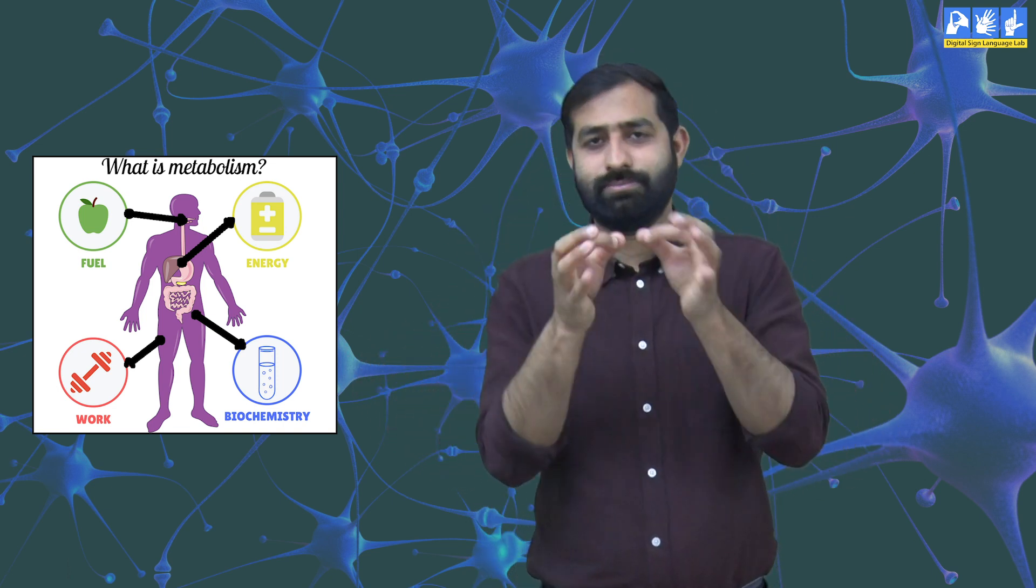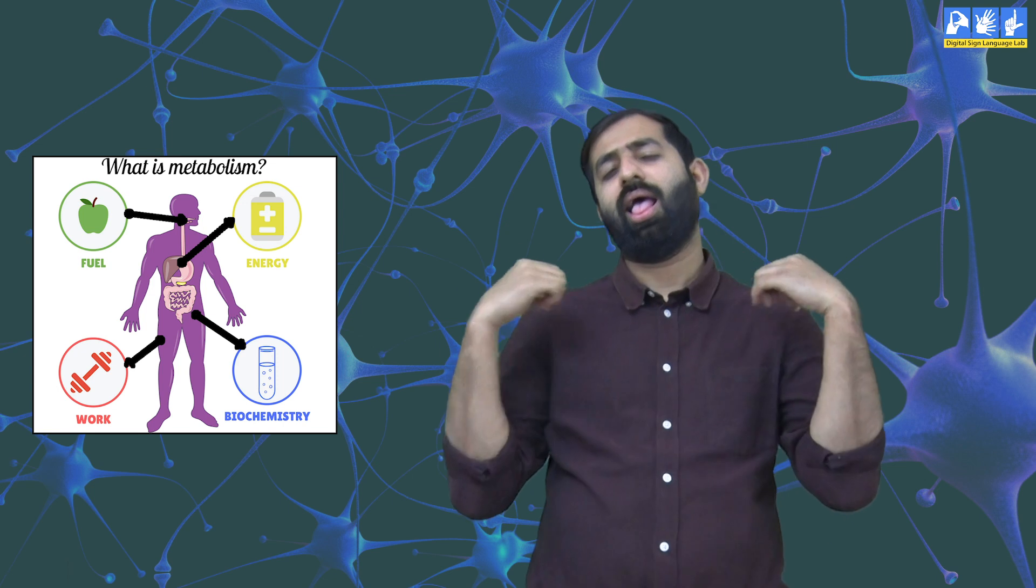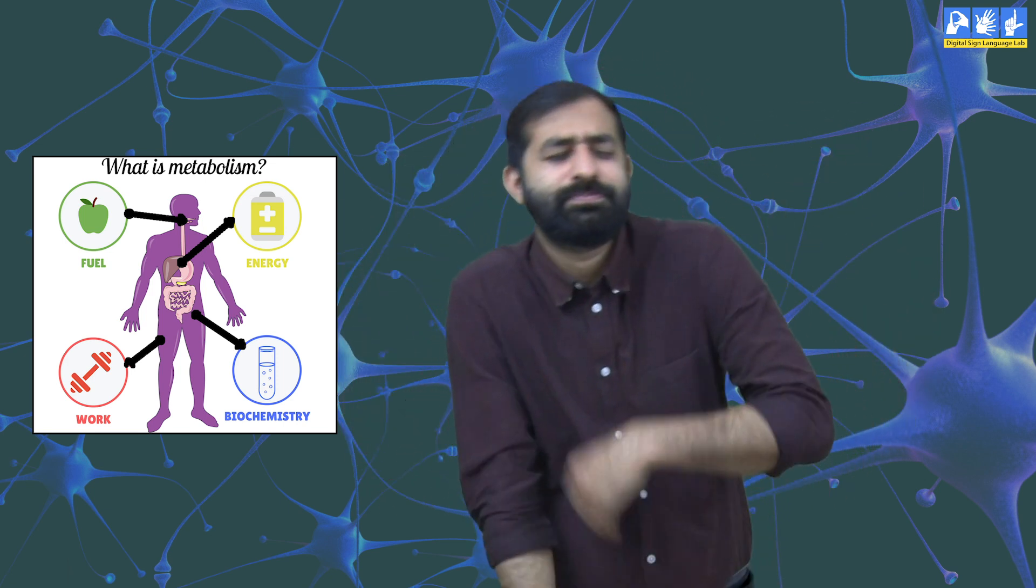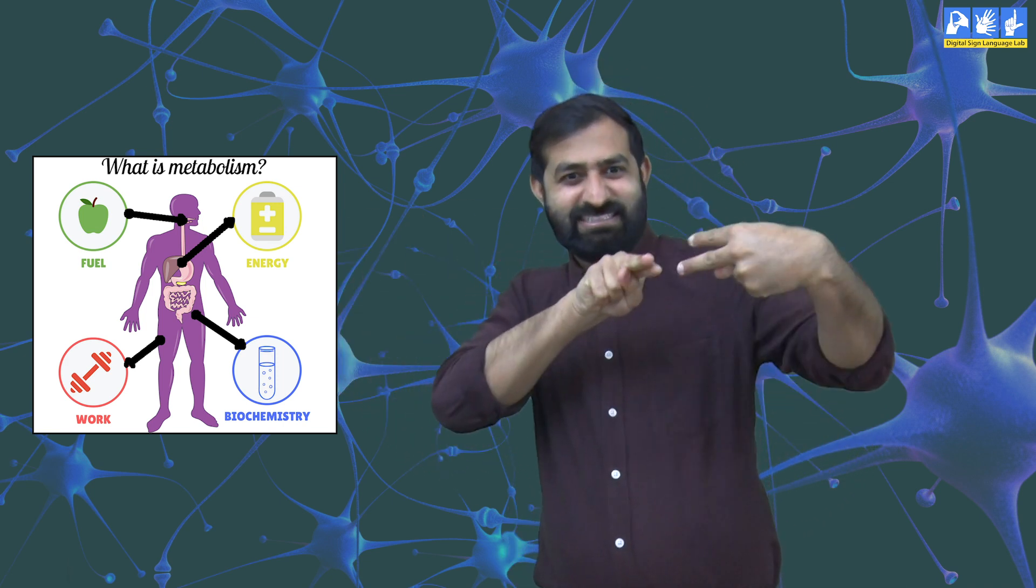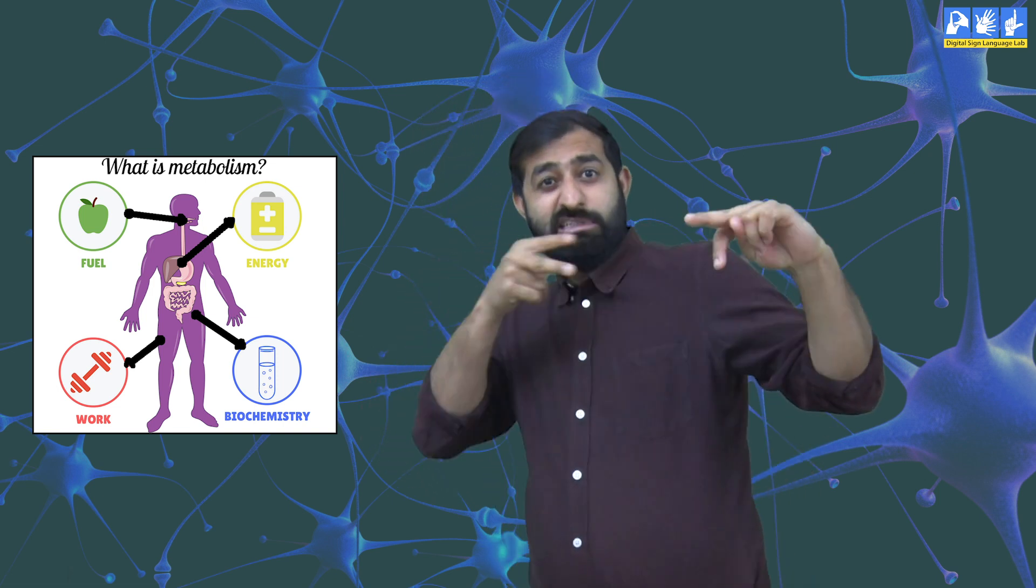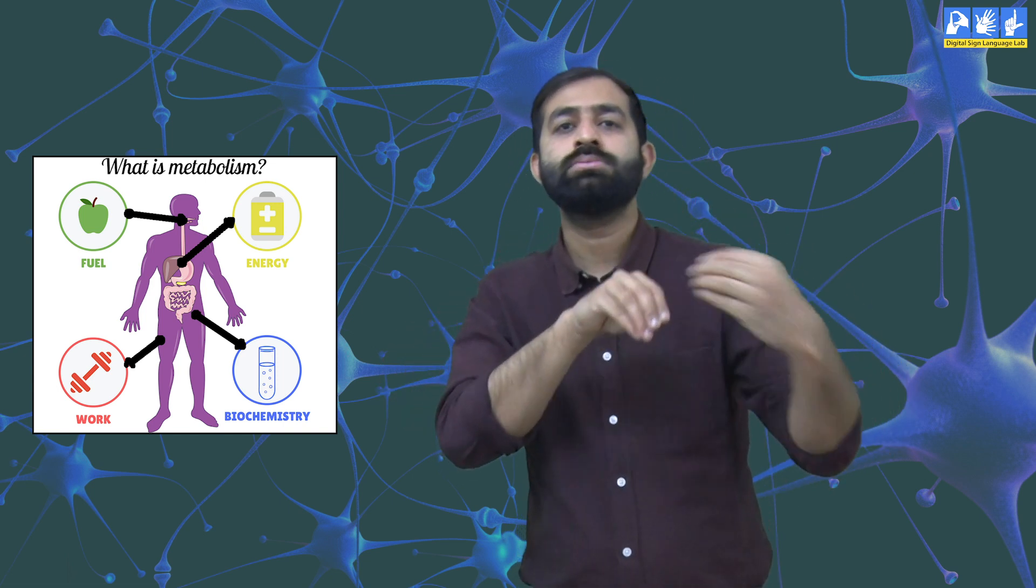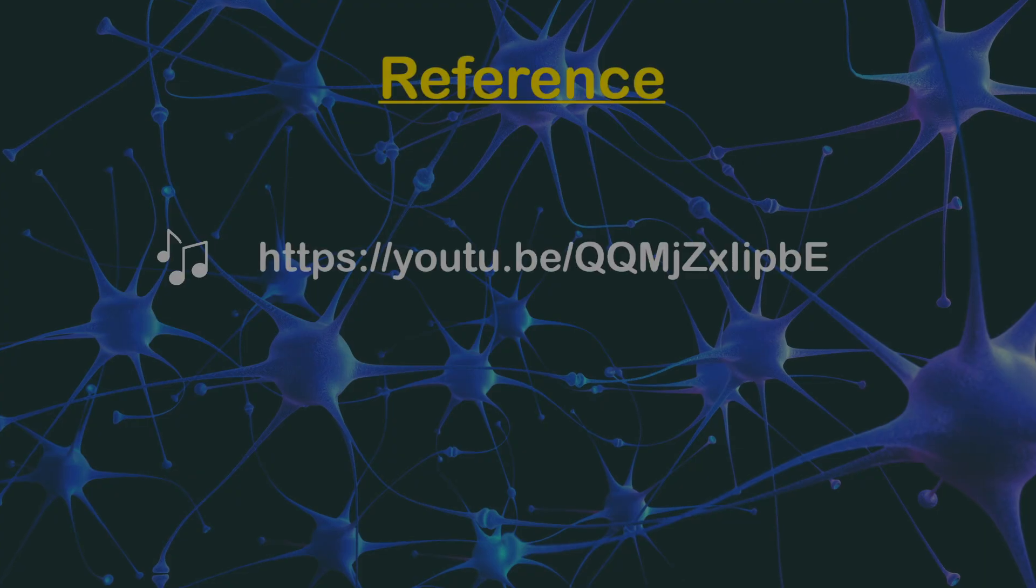Some people do not exercise regularly due to laziness. If they suddenly start working out, then after an intense workout, they feel soreness in the body because the muscles were not used to working harder. They feel a pull and discomfort in the muscles that goes away when they start doing exercise regularly and the muscles become flexible. This is also a chemical reaction that happens in the body. Similarly, these chemical reactions also occur in plants and animals.